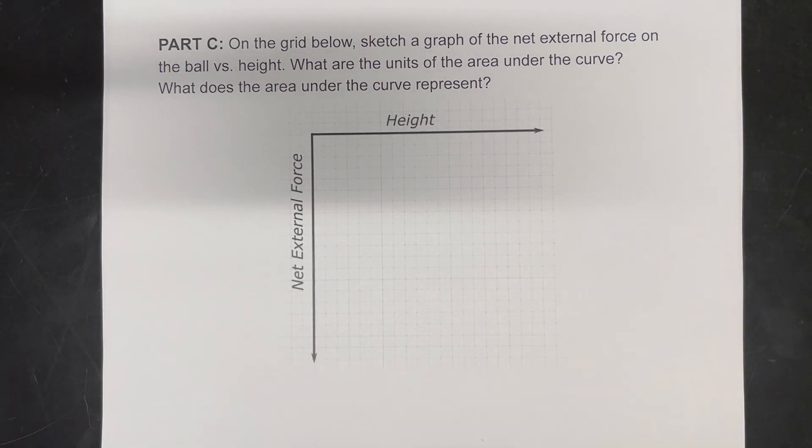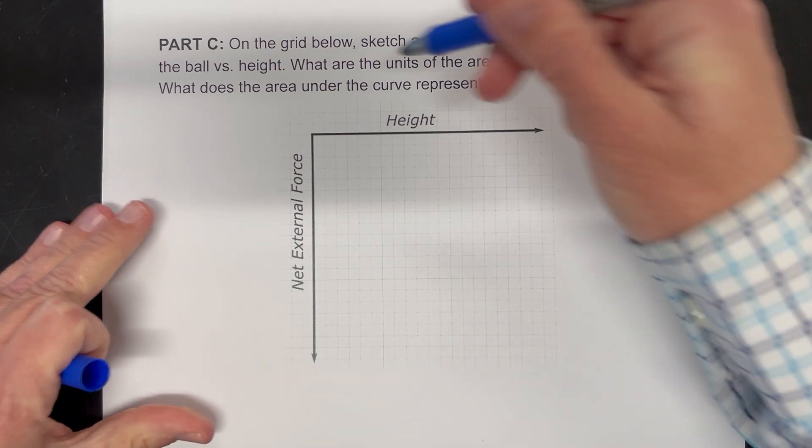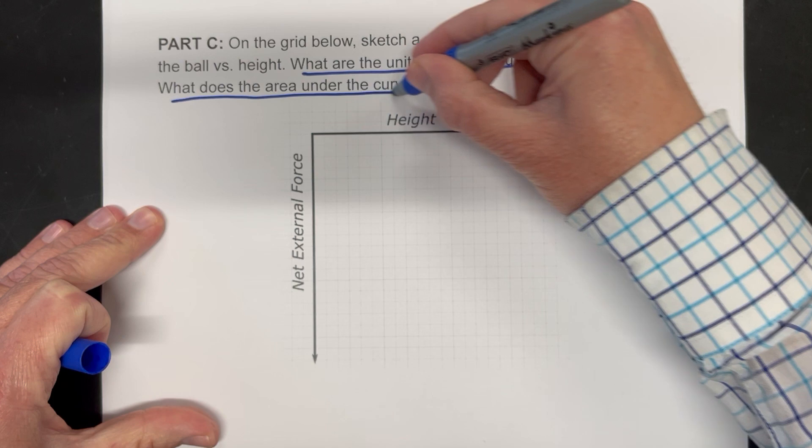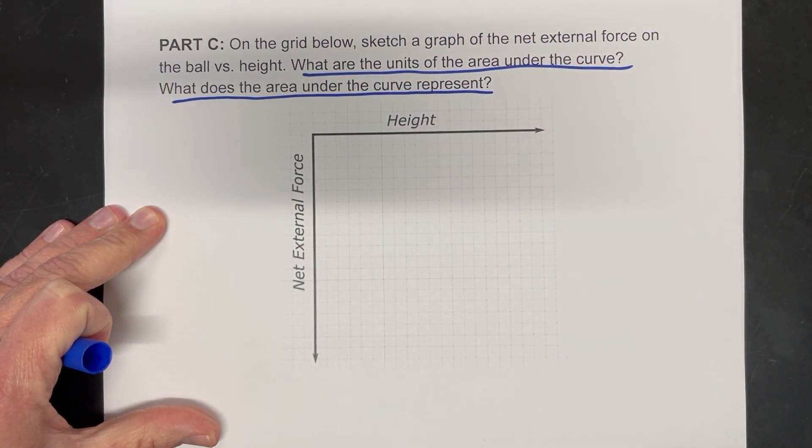So next part, part C. It says sketch a graph of the net external force on the ball versus the height. What are the units of the area under the curve? And what does the area under the curve represent?